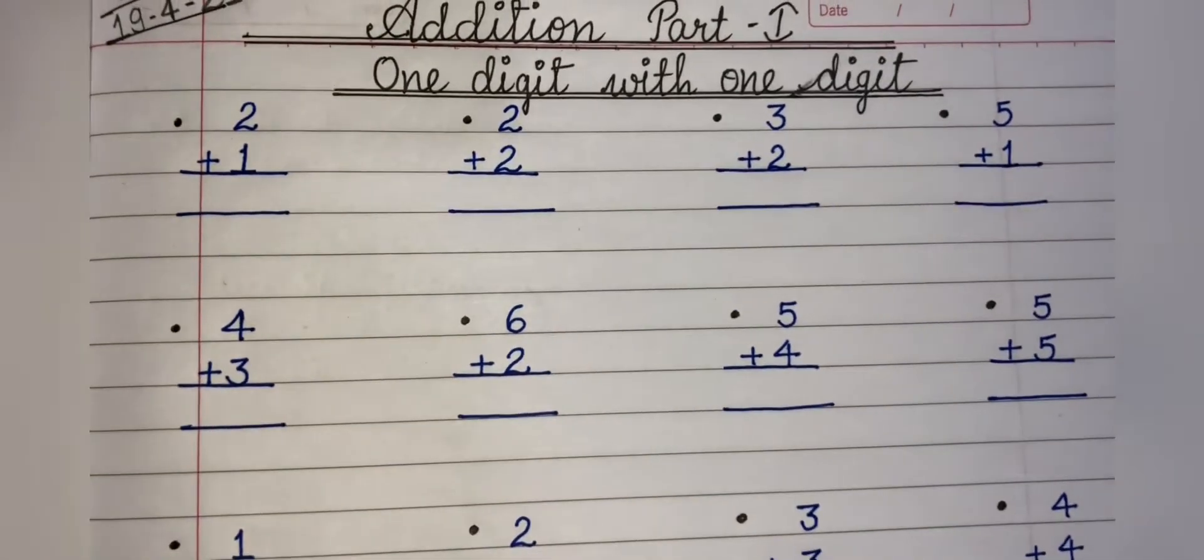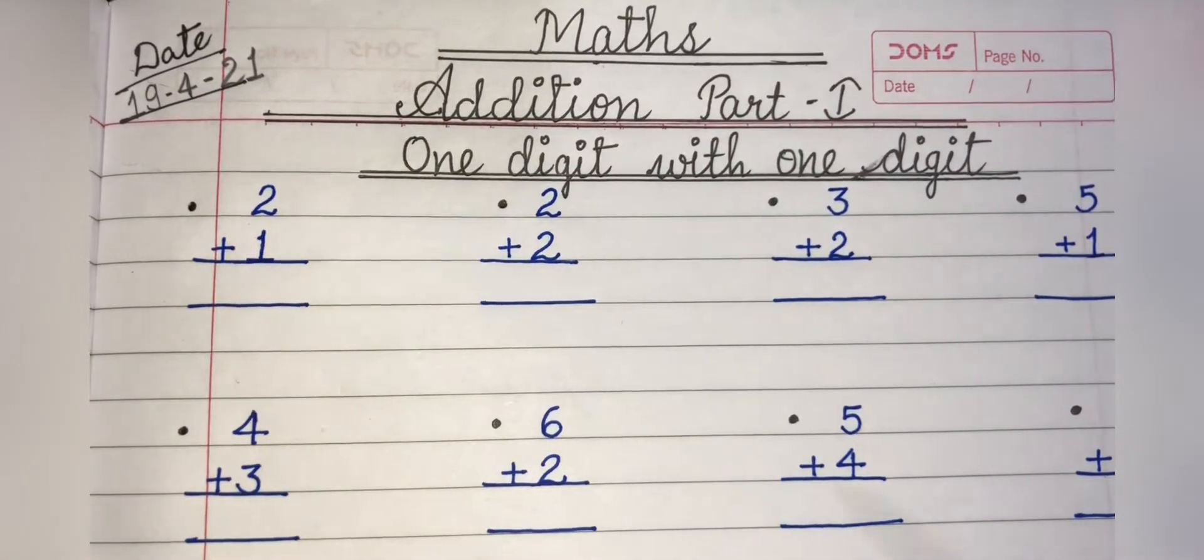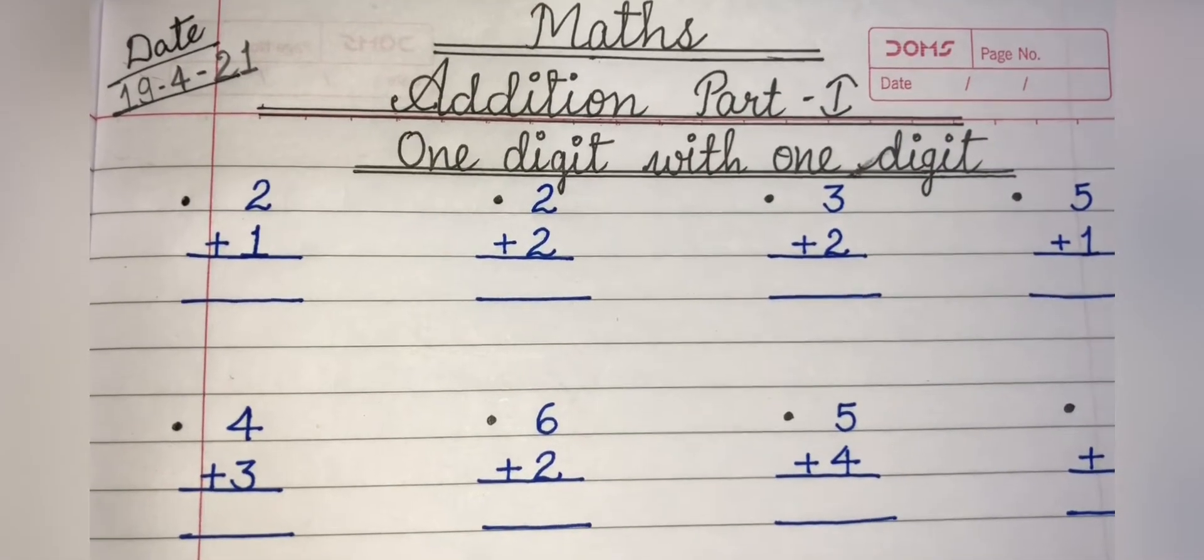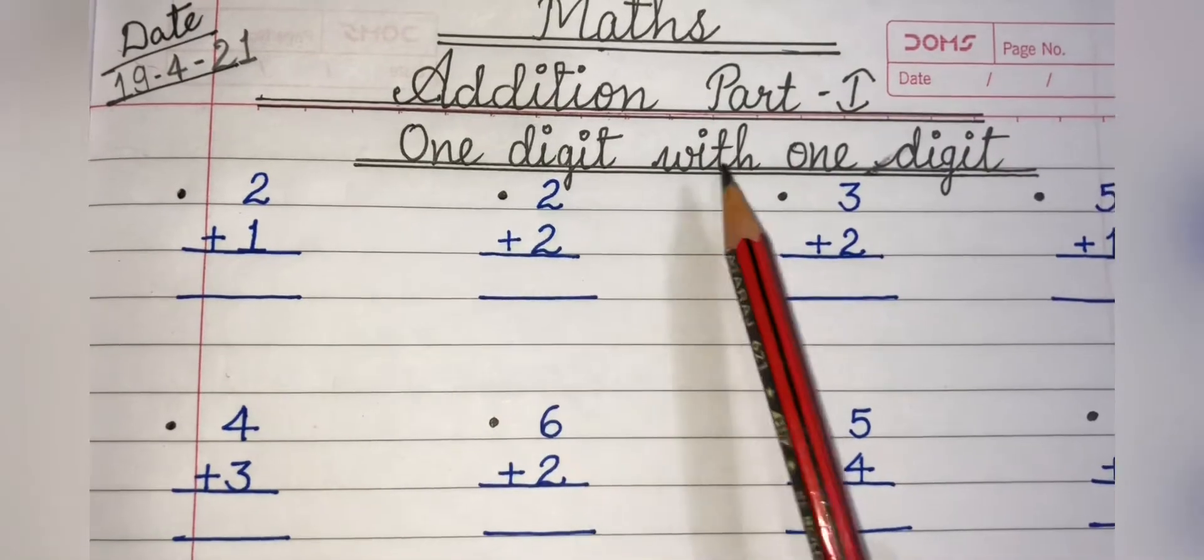Dear students, first of all you will start by writing date and the date today is 19th of April 2021. Then the topic is edition part 1, one digit with one digit.